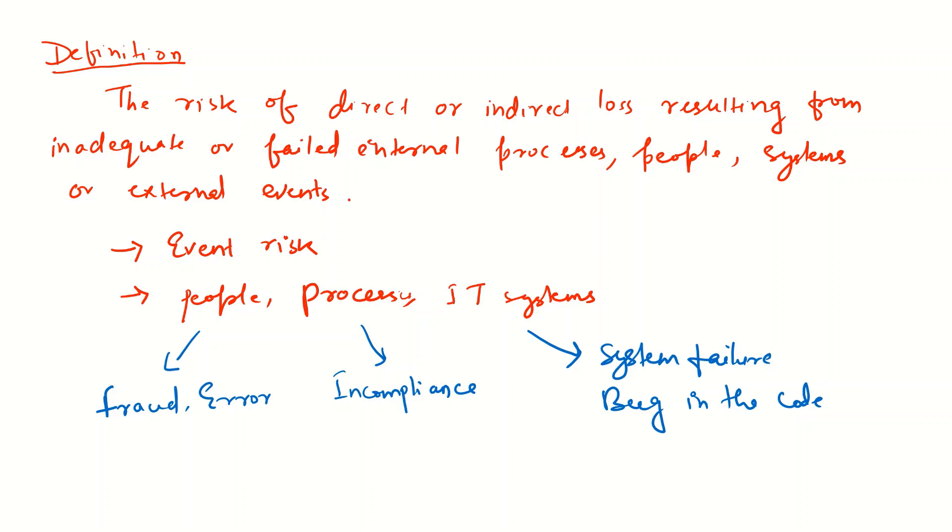The loss arising from operational incidents would come from internal processes, from people, from IT systems, from any other external events resulting in loss of money. This is known as operational risk.